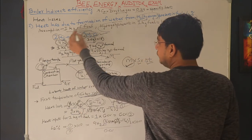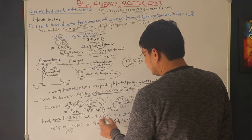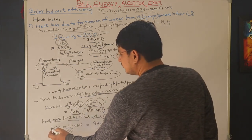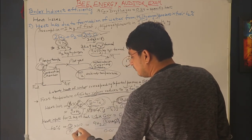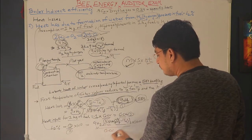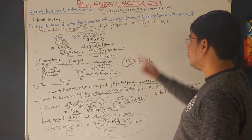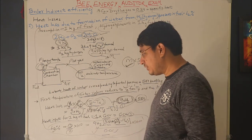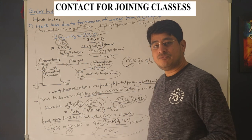Since the heat input for 1 kg of fuel = GCV, the L2% = {9 × H₂ × [584 + Cp × (Tf − Ta)]} / GCV × 100. This is the formula for L2 percent — the loss due to formation of water from hydrogen present in fuel. Understanding the derivation makes it much easier to remember than simply memorizing the formula.